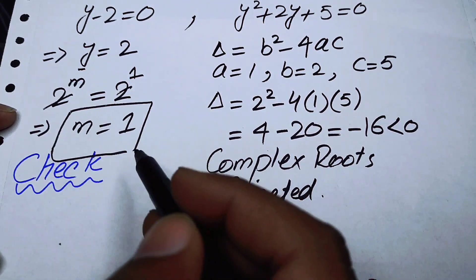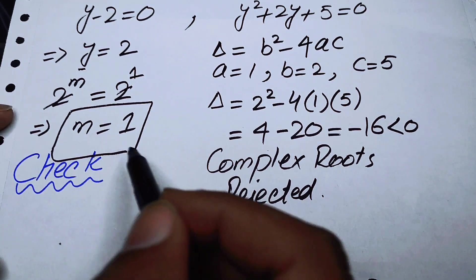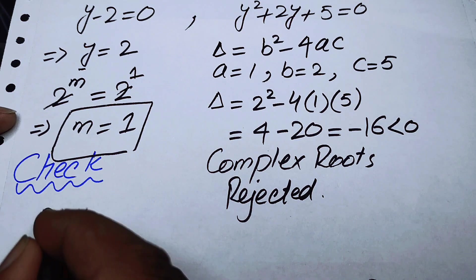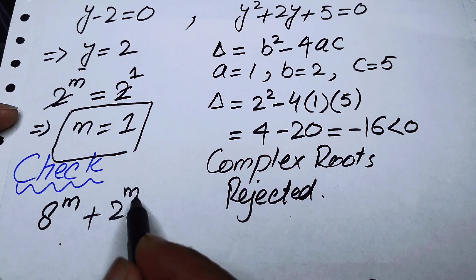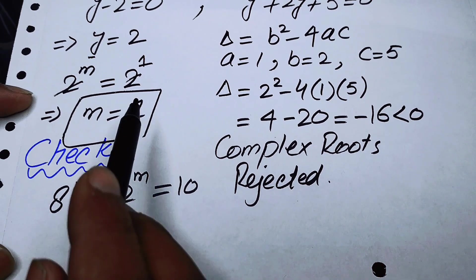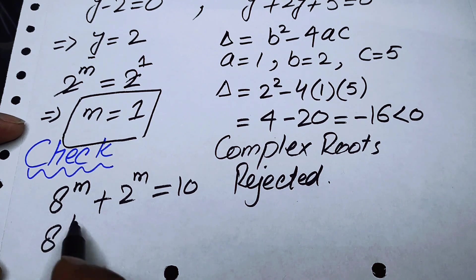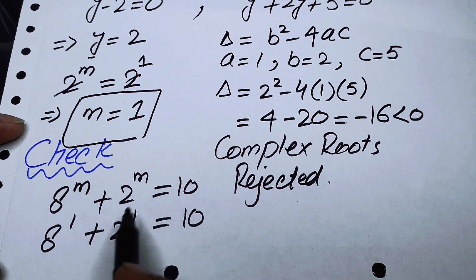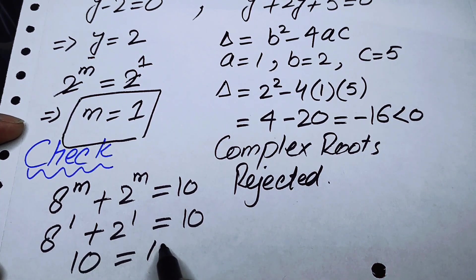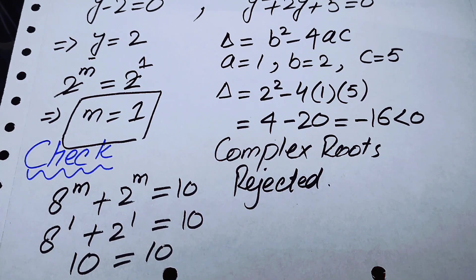We can now verify whether m equals 1 satisfies the given equation. The given equation is 8 to the power of m plus 2 to the power of m equals 10. Putting m equals 1, we get 8 to the power of 1 plus 2 to the power of 1, which equals 8 plus 2, which equals 10. This confirms that m equals 1 is the only real root of the given equation. Thank you so much for watching this video — please subscribe to my channel for more exciting videos.